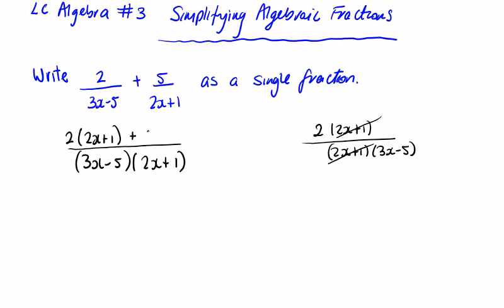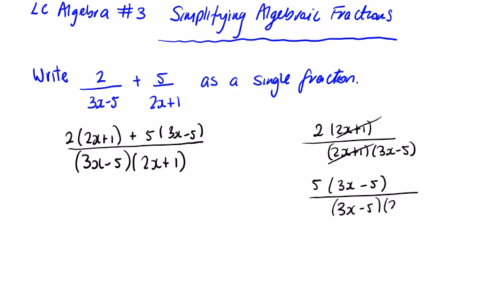The same applies to the 5. If we multiply 5 by 3x minus 5, the same thing happens — we have 5 times (3x minus 5) over (3x minus 5)(2x plus 1). And you can see that that's just 5 over 2x plus 1.